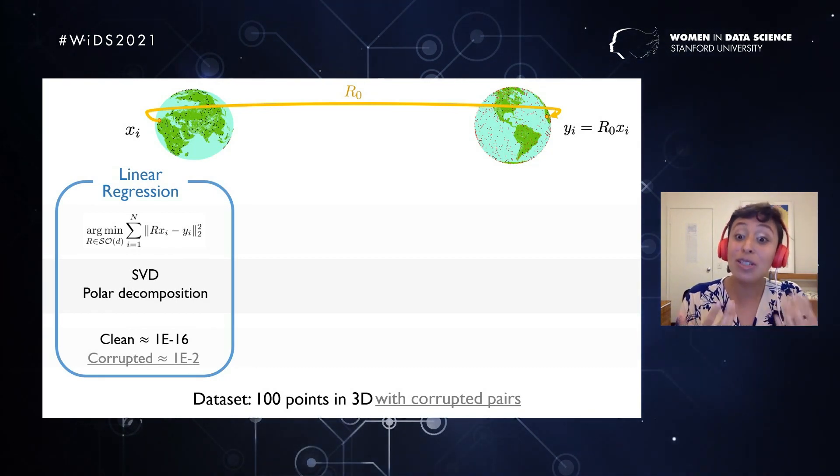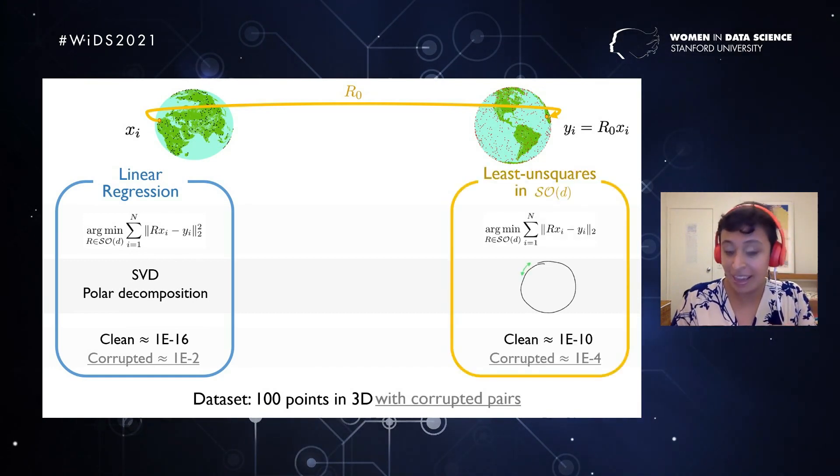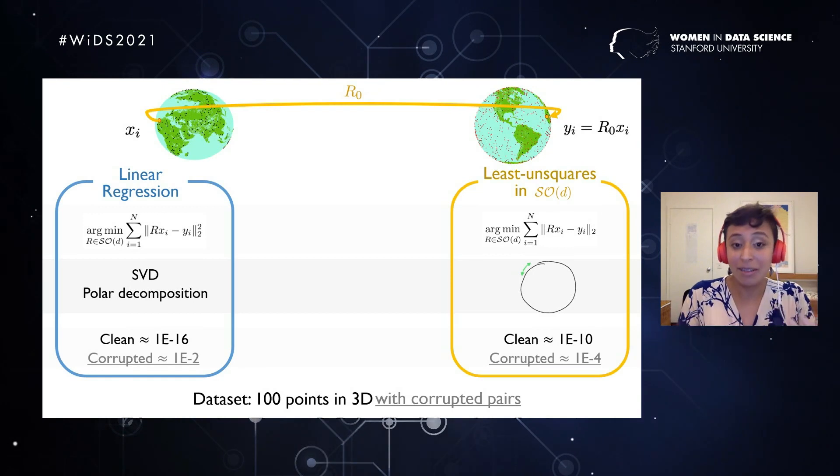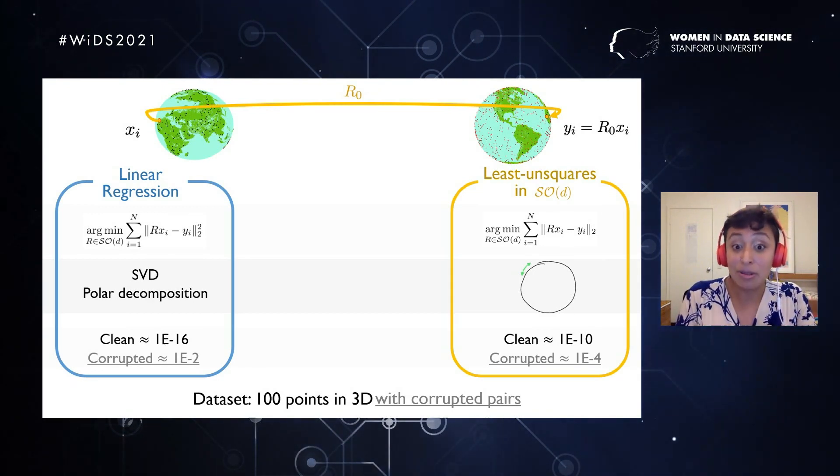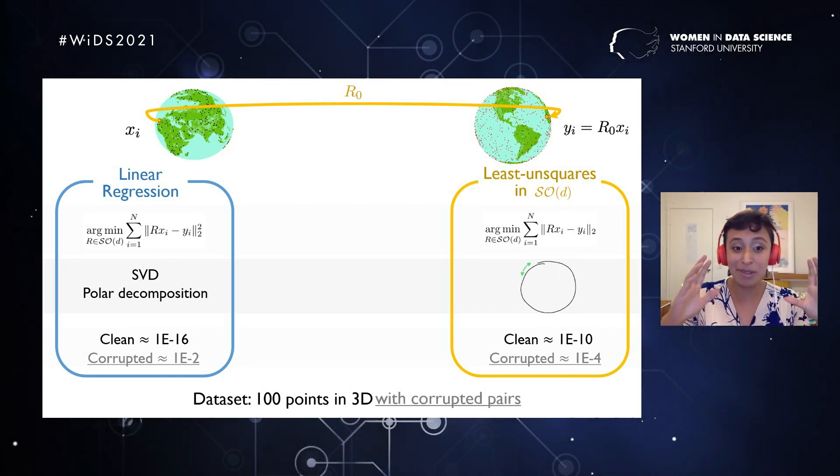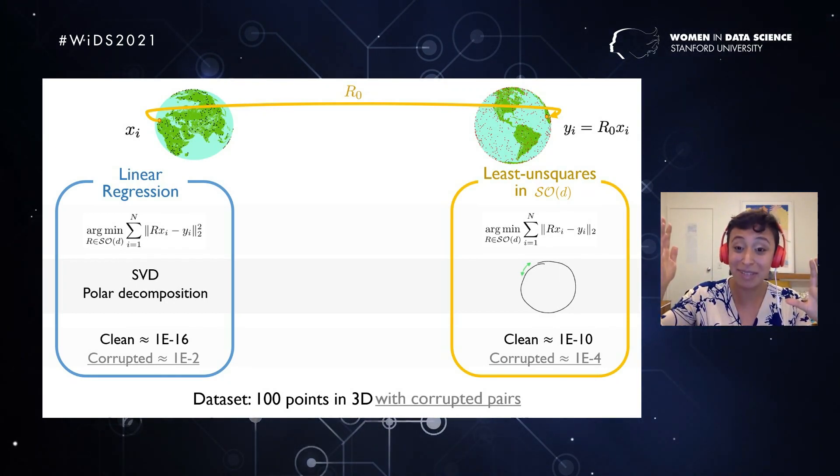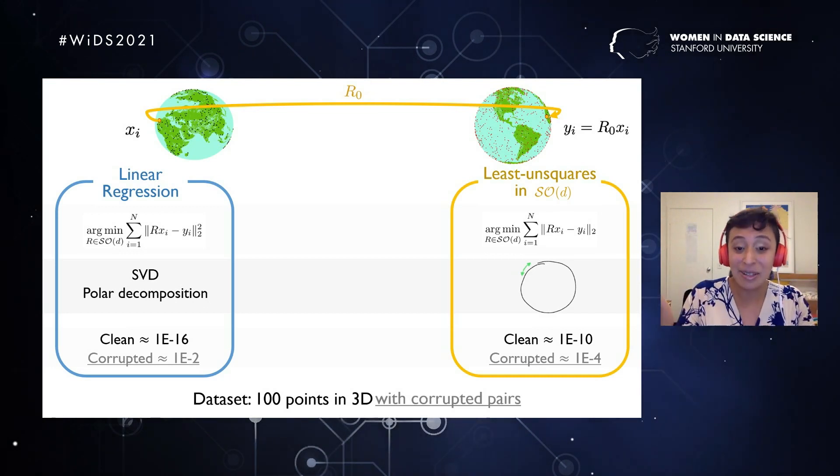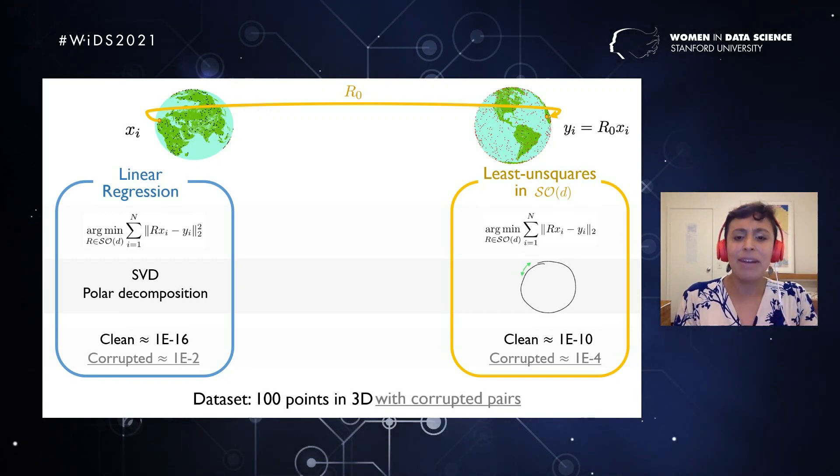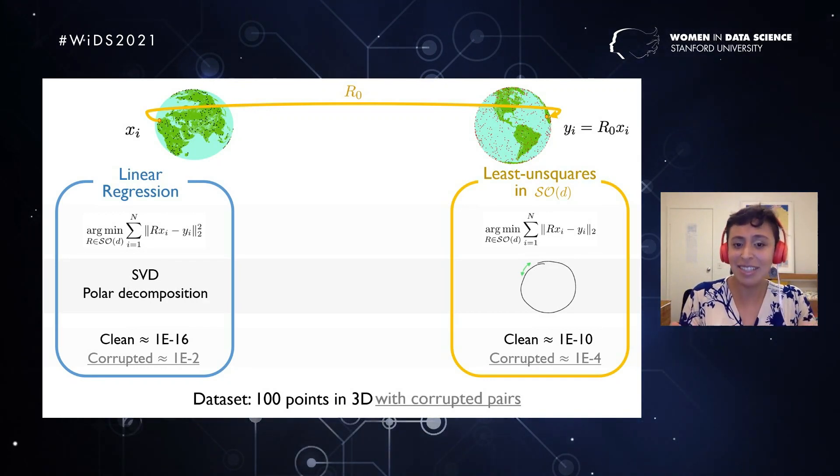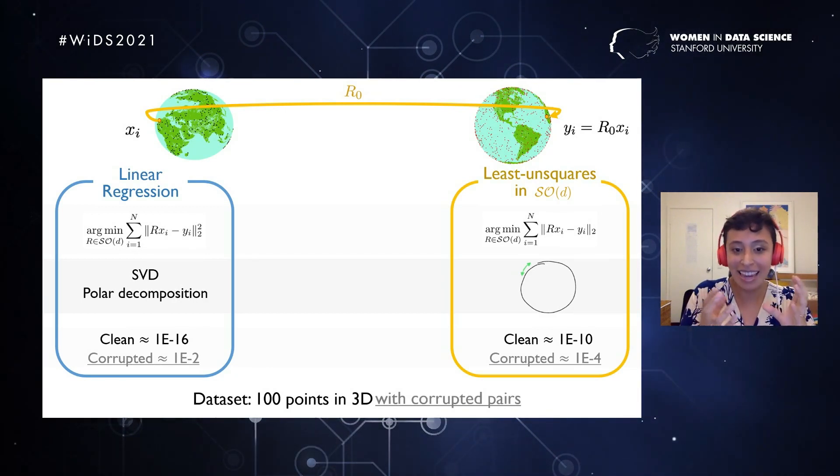So our approach was, what if we define a new loss function that can give us a better result? And the proposal that we did was something called least unsquared loss. Meaning, you just take least squares, you remove the squares out of the terms that you are adding up, and that is called least unsquares. When we apply it to our corrupted data, we get an error of 10 to the minus 4, and then that is way better. However, what is the caveat here?